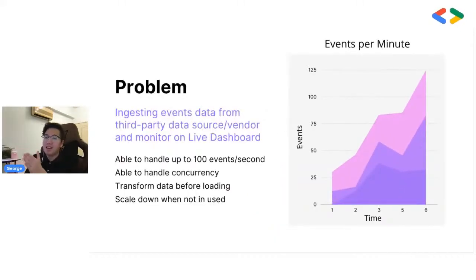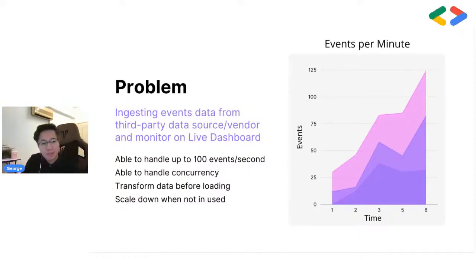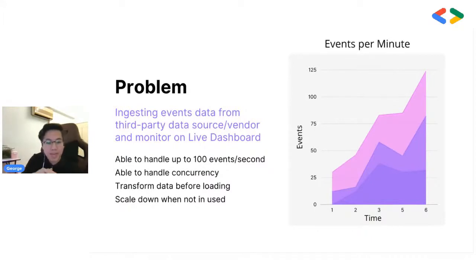The problem is that we want to ingest events data coming from a third-party vendor or data source, and business stakeholders wanted to monitor this live data on a live dashboard. Since it's streaming data, we needed Cloud Run to handle up to 100 events per second and handle concurrency — because different users are doing things simultaneously. We also need to transform the data before storing it for the dashboard, and scale down to zero or one when no one is using the system, such as at midnight.